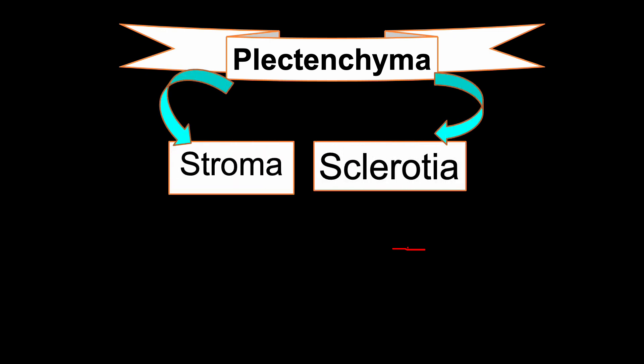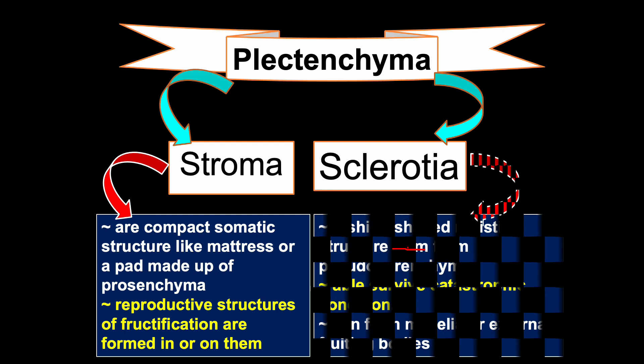Both prosenchyma and pseudoparenchyma compose various types of vegetative and reproductive structures. Mainly stroma and sclerotia are two typical examples of plectenchymal structures. Stroma is usually made up of prosenchyma, while sclerotia are made up of pseudoparenchyma tissue. Both stroma and sclerotia are important somatic structures of fungi. Stroma are compact somatic structures like mattresses or pads made up of pseudoparenchyma. These are considered as reproductive structures or fructifications, and are formed in or on them.